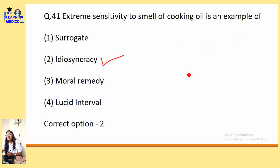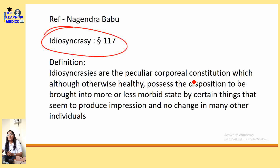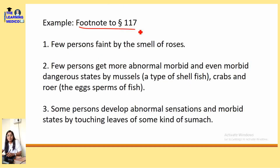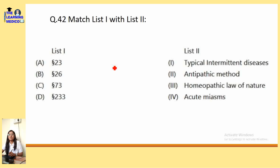Examples of idiosyncrasy are given in the footnote to aphorism number 117: few persons faint by the smell of roses, few persons get more abnormal, morbid and even dangerous states by muzzle, crabs and roar, and some people develop abnormal sensation and morbid states by touching leaves of some kind of sumac.